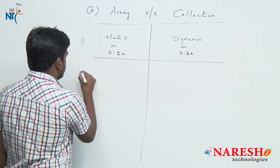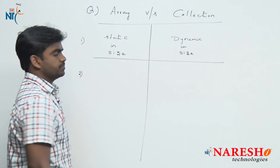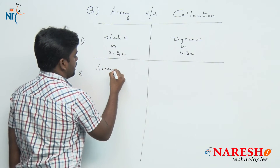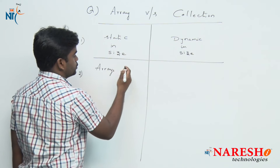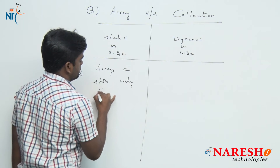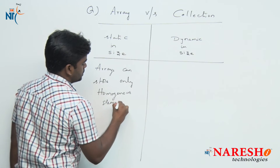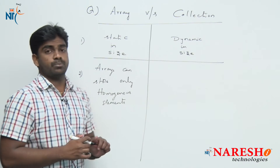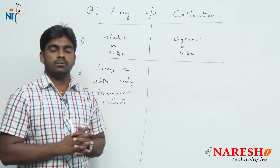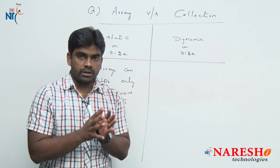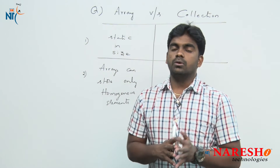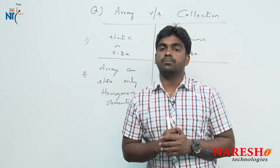The second important difference: arrays can store only homogeneous data elements. What are homogeneous elements? They are the same type of elements — either we can store all integers, or all float values, or all double values — only one type.